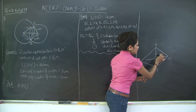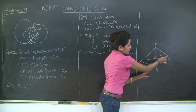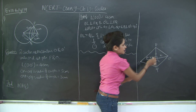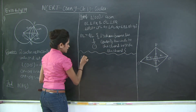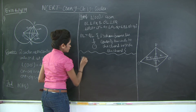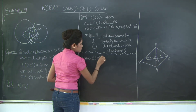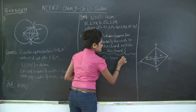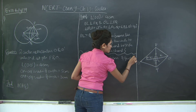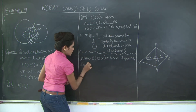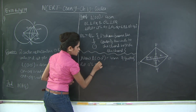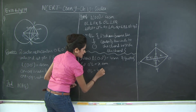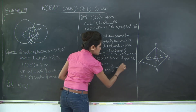Since length OO' is 4 centimeters, let O'L be equal to x centimeters. Therefore OL will be 4 minus x centimeters.